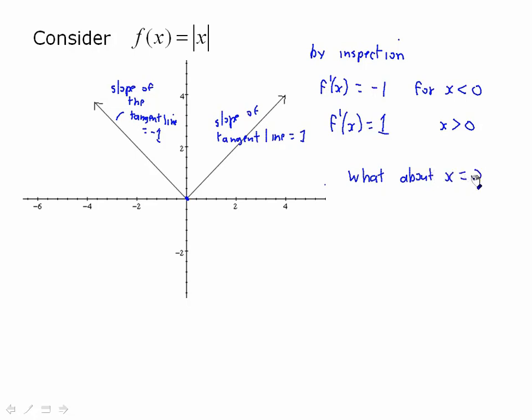So we've established that this is differentiable if x is smaller than 0. And it's differentiable if x is greater than 0. Because we were able to get the derivative. We were able to get the slope of the tangent line.